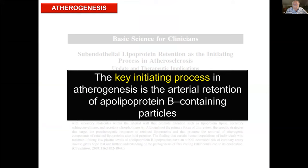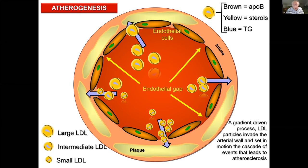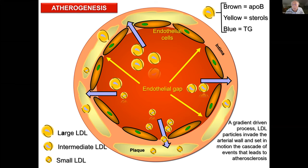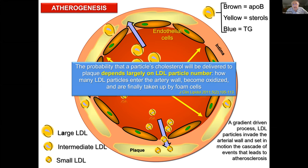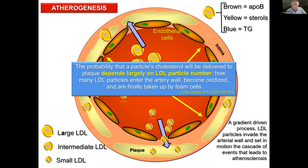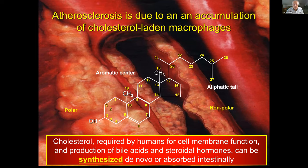The particles that make it through your endothelial barrier — either by gaps or by transcytosis — are your ApoB-containing particles. The number one driving force of your ApoB, predominantly LDL particles, into the artery wall is particle number. How do you measure LDL particle number? You ask the lab to do apolipoprotein B concentration. The probability that a particle's cholesterol will be delivered to plaque depends largely on LDL particle number — how many LDL particles enter the artery wall, become oxidized, and are taken up by foam cells.